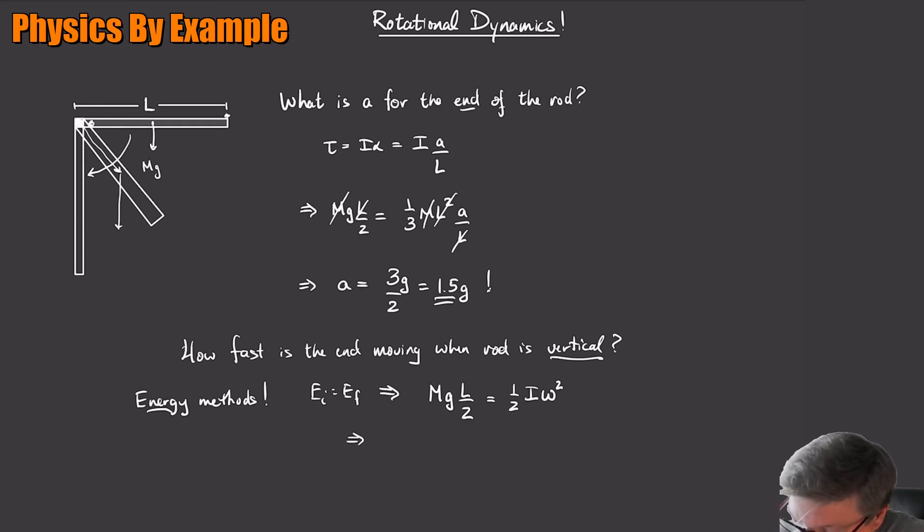Okay, so MgL over 2 is equal to one half, what is I, the moment of inertia around that pin is just going to be one third ML squared. And then omega, now we put in the connection between omega and V. So this is going to be V over that length L, that's going to be the speed at that point.